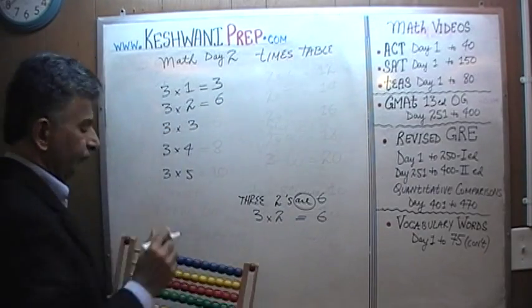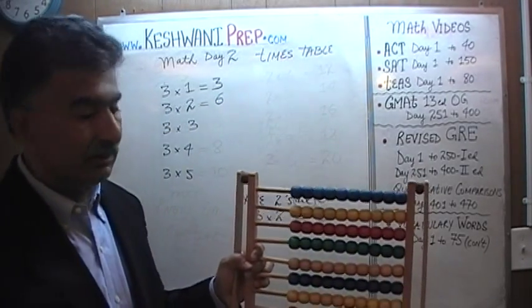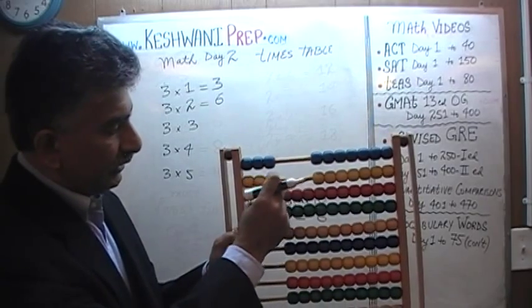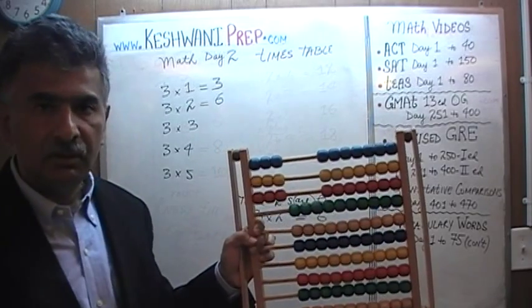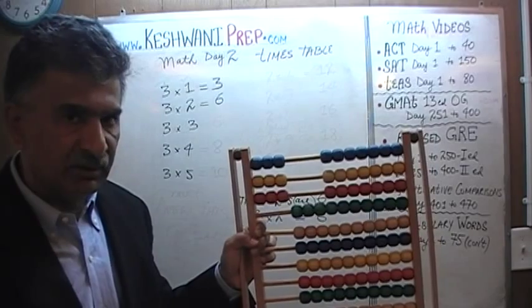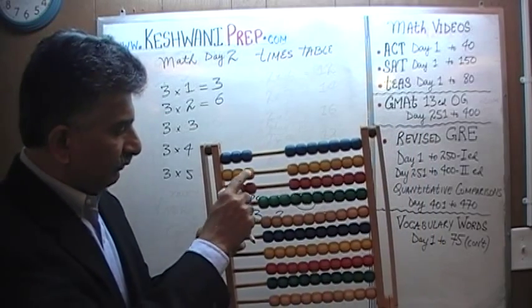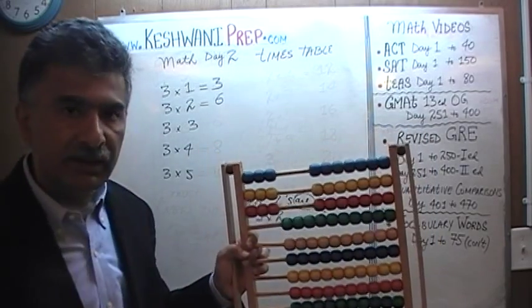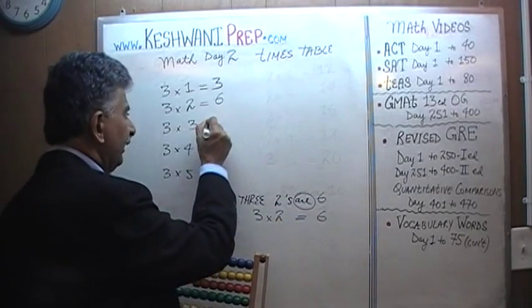How about 3 3's? 1 three, 2 three, 3 threes. How many do you suppose 3 3's are going to be? 1, 2, 3, 4, 5, 6, 7, 8, 9. Looks like 9. 3 3's are 9.